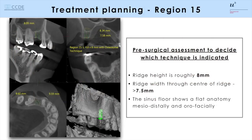In the right maxilla, the anatomic situation is a little bit more advanced because the bone height available is roughly eight millimeters. Since we are dealing with a single tooth situation, we are using a sinus floor elevation to allow for a 10 millimeter implant for single tooth support. When the anatomy of the sinus floor is flat, as in the present case, an osteotome technique can be considered.